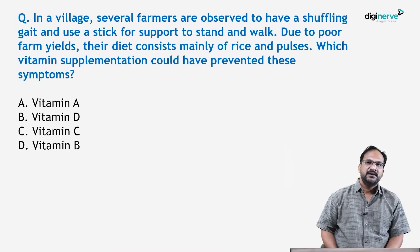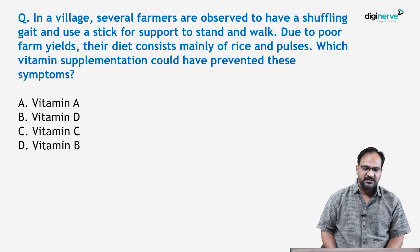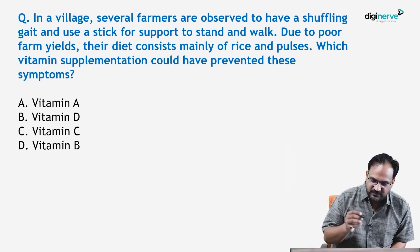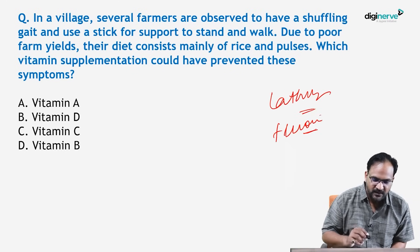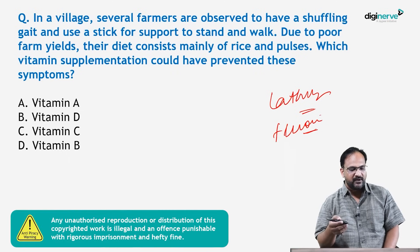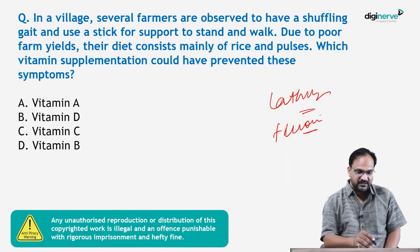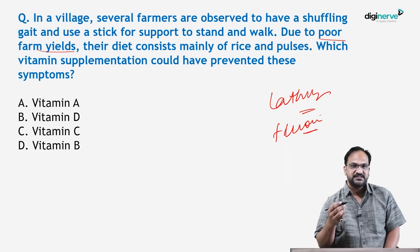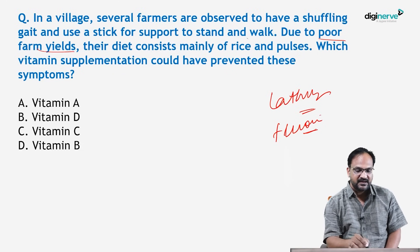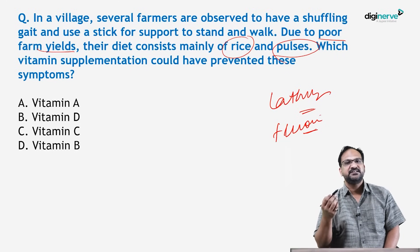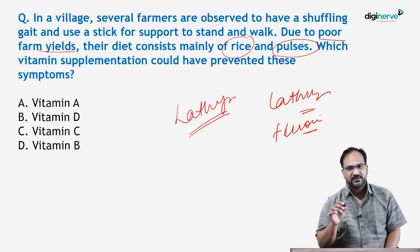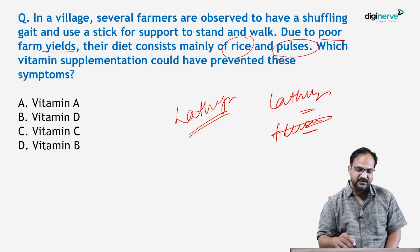Question one: In a village, several farmers are observed to have a shuffling gait and use a stick for support to stand and walk. When we see stick use and difficulty in walking, we think about two diseases: lathyrism and fluorosis. Further, the question states that due to poor farm yields, their diet consists mainly of rice and pulses. With poor farm yield, the pulses they consume are actually weeds — specifically Lathyrus sativus — so this points to lathyrism. Since there is no mention of water, fluorosis is not an option.